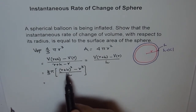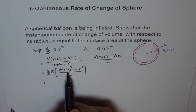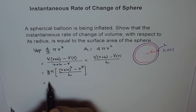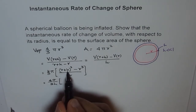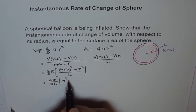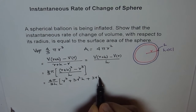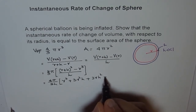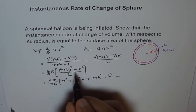We can use the a plus b whole cube formula to expand. So let's expand (r+h)³. We take h outside as well, giving us 4π/3 over h times [(r+h)³ minus r³]. Expanding (r+h)³ using a plus b whole cube: r³ plus 3r²h plus 3rh² plus h³. This is the expansion of the first term, minus r³.